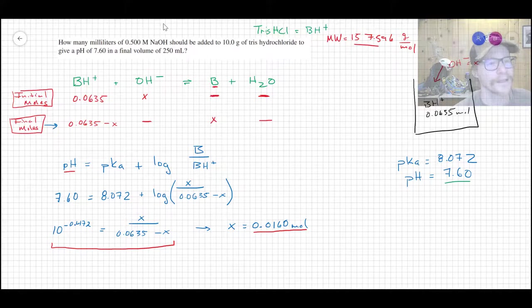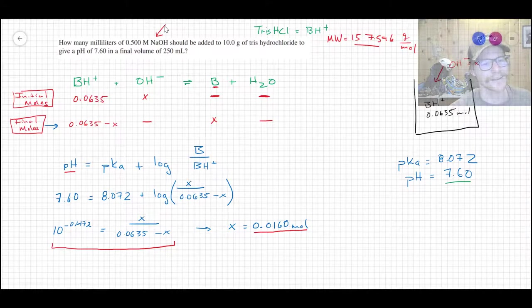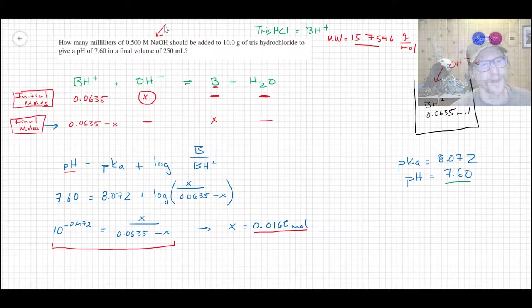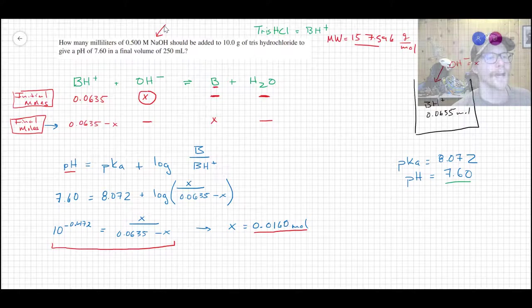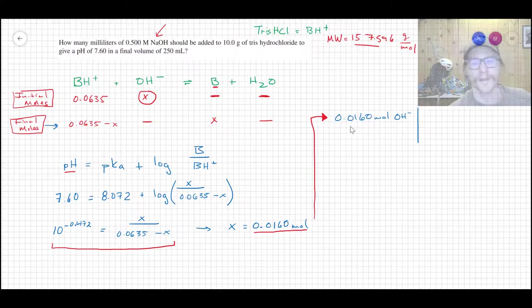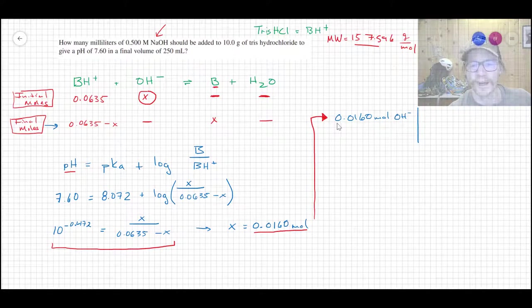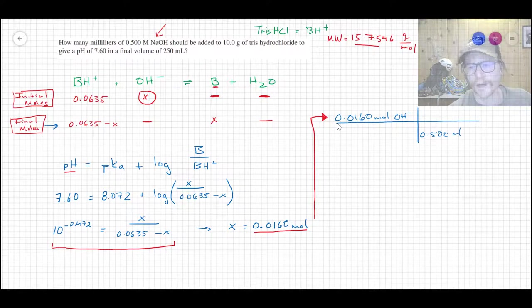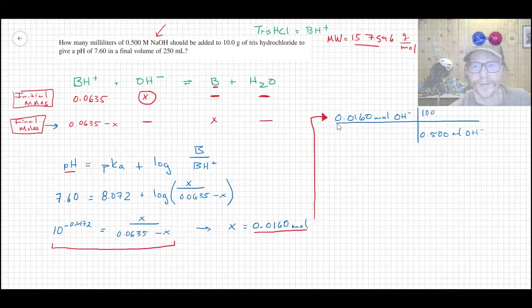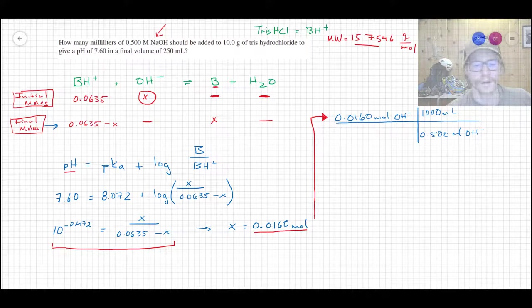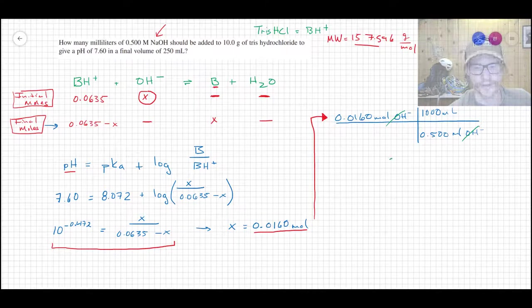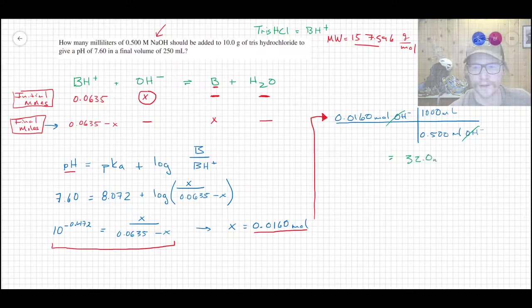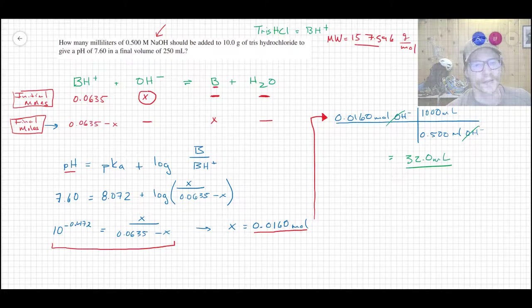And we have a final volume of 0.250 liters. So we need to take that into consideration. And at the same time, the question was asking how many milliliters of this base do we need to add to the system? So we just figured out X here, which told us the moles of hydroxide that we need to add. So I'll do a little dimensional analysis knowing that we have 0.5 molar NaOH. All I need to do then is take 0.500 moles of NaOH per 1000 milliliters. Those units cross, go away, and I can solve this. And this gives me a value of 32.0 milliliters.